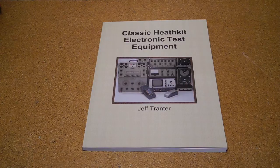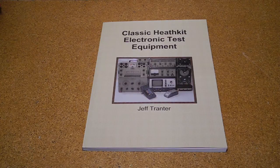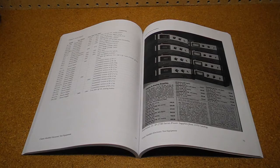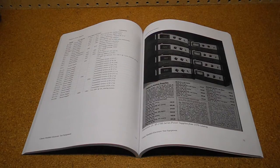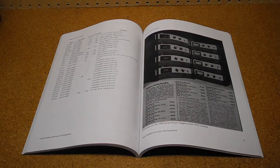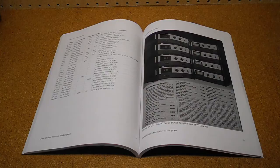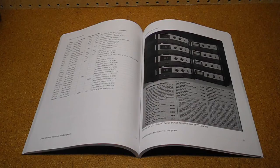And tips on buying and restoring vintage test equipment from sources like eBay. Separate chapters cover the major categories of component testers and substitution boxes, frequency counters, meters, oscilloscopes, power supplies, signal generators, tube testers and checkers, and miscellaneous test equipment.